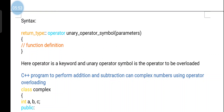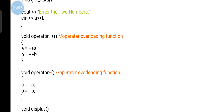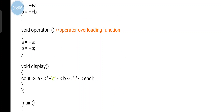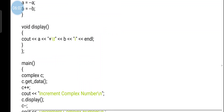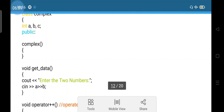The syntax uses the scope resolution operator outside the class: return_type ClassName::operator symbol(parameters). If you want to define the operator function outside the class, you use the scope resolution operator. An example will make this clear.